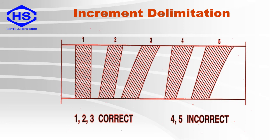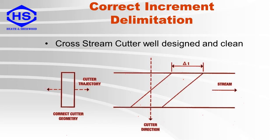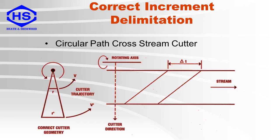Here are some examples of increment delimitation. Sections 1, 2, and 3 have a constant width taken across the sample lot. Sections 4 and 5 are biased towards the top as the width is increasing. This shows an example of correct increment delimitation using a cross-stream cutter — the cutter moves across the stream and takes an equal portion of sample from all sections. This also shows correct delimitation using a circular path cutter, where the cutter blades have a radial geometry and the ends of the blades are separated more since they are moving faster through the stream.